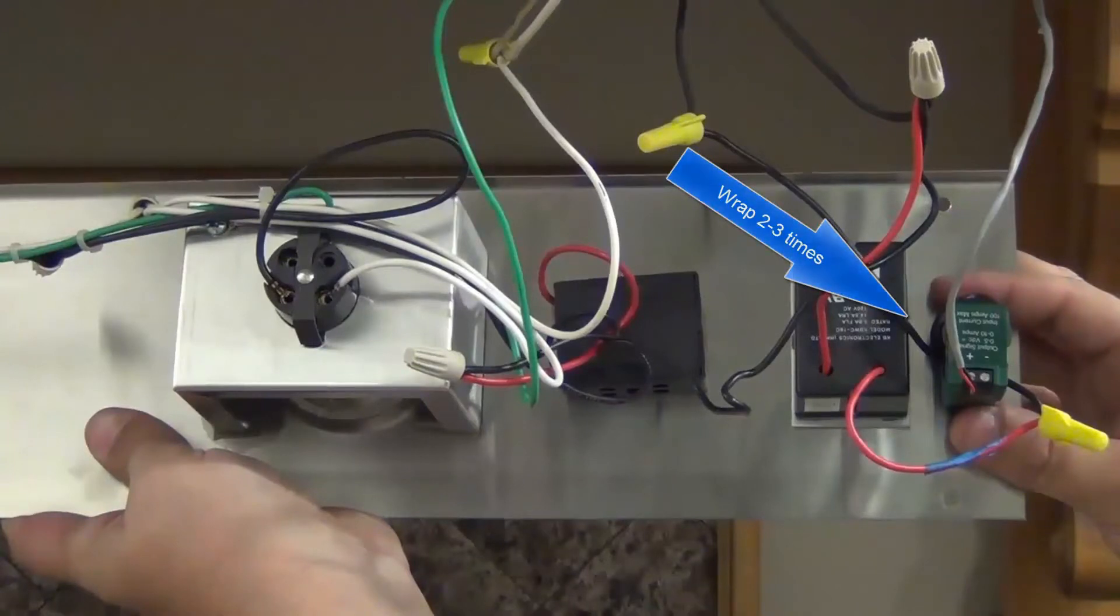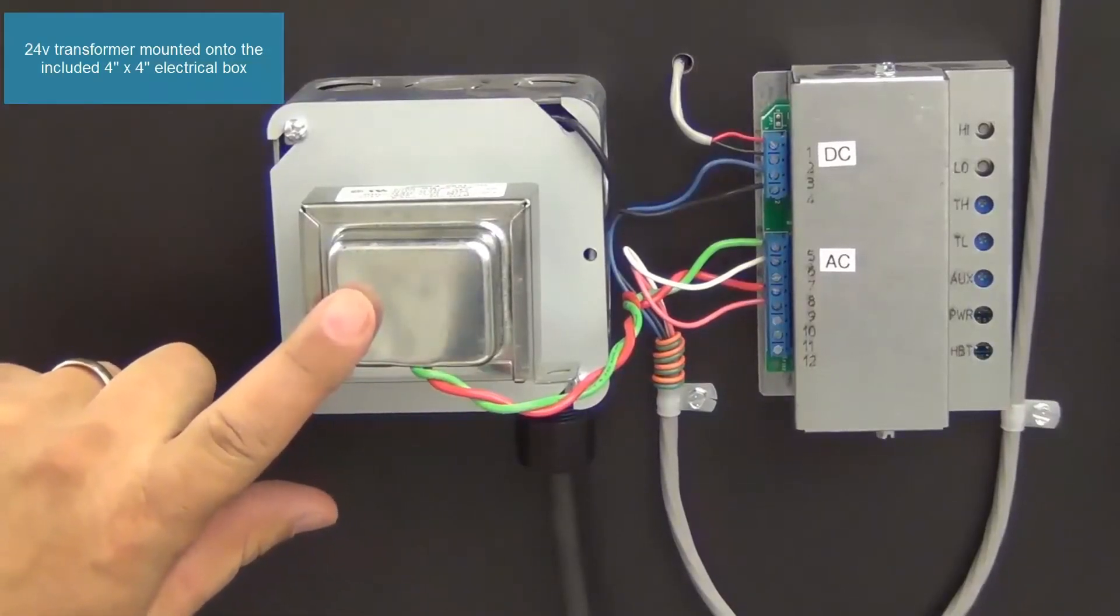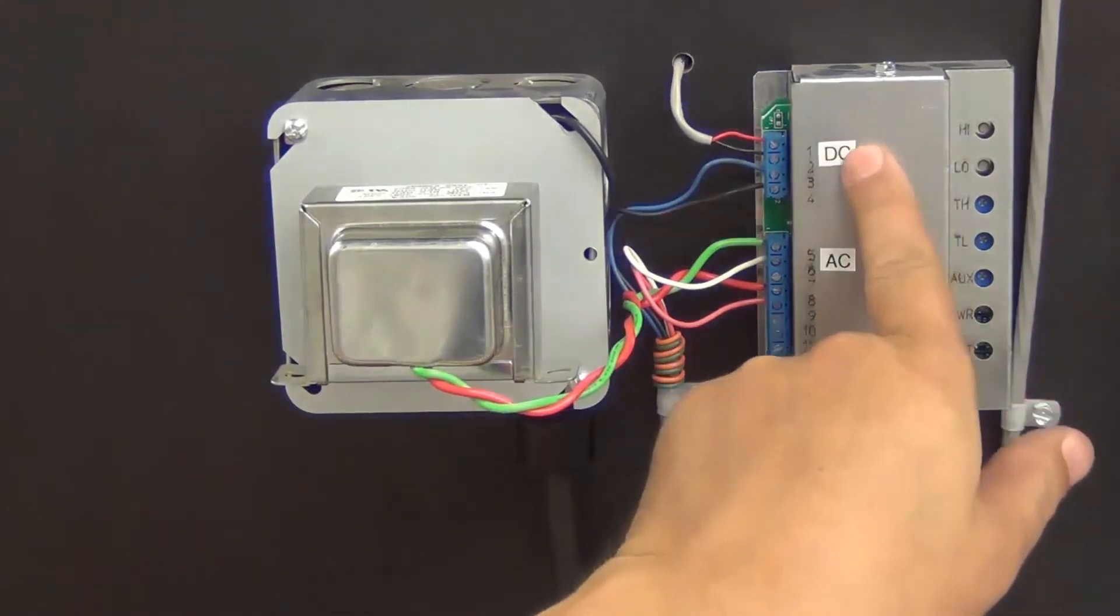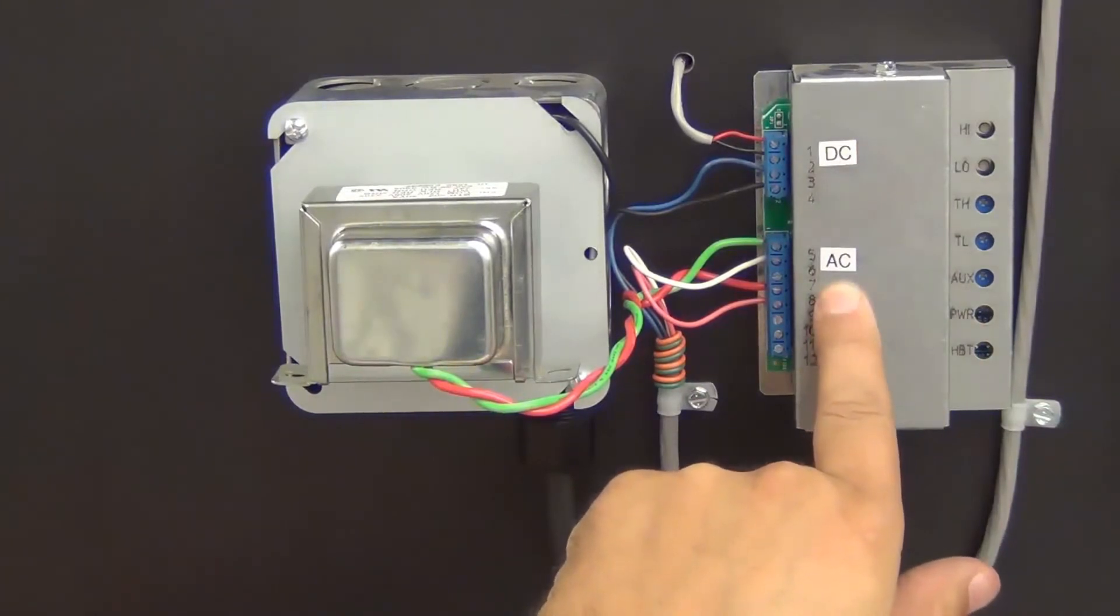The 24 volt transformer has been mounted into the included 4x4 electrical box. The Makeup Air control has all the DC voltage at the top and AC low voltage at the bottom.